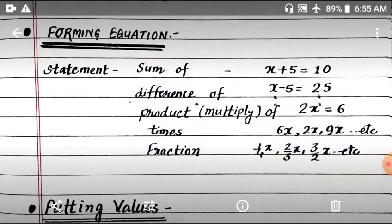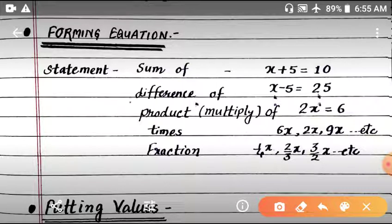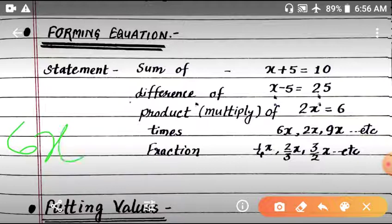Times is the same as product. Here you multiply, like two times, three times, six times. So this is multiplication. If you say variable 6 times which is number 8, then you do 6 into x equal to 8.